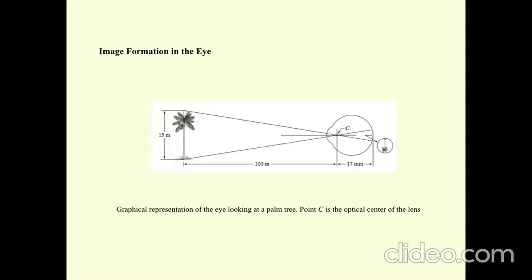Image Formation in the eye. Graphical representation of the eye looking at a palm tree. Point C is the optical center of the lens.